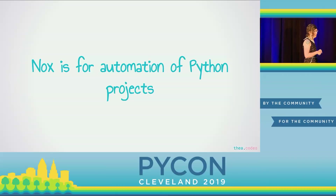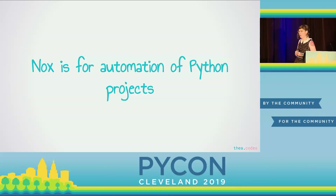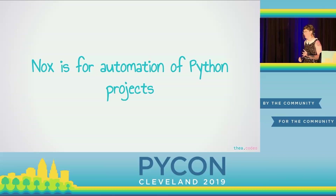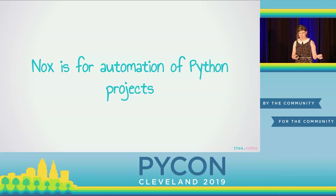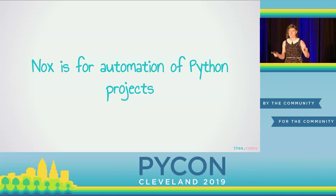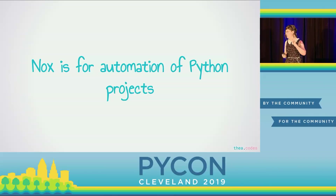Nox is for automation of Python projects. It is more flexible than Tox, but also less focused — it has pros and cons. It's a really great choice for Python applications, especially web applications that tend to have a lot of peripheral tasks. I've seen Nox used in some really interesting ways. For example, Google Cloud Platform has about 200-odd sample applications, and it became pretty tedious to maintain individual test configuration for each one. So they actually use Nox to discover the sample applications, generate sessions for each sample, and run them all — instead of having 200-odd configuration files, they just have one, which is really cool.